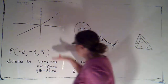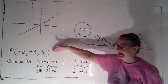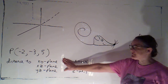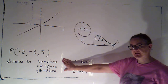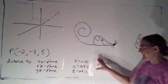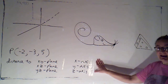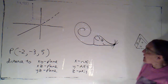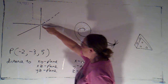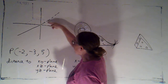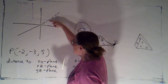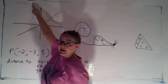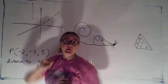At the end of the last video I gave you point P and challenged you to find the distance to each of the three coordinate planes and then to each of the three coordinate axes. I've drawn the point up here. From the origin I went back two, left three, and up five. So here's my point P.